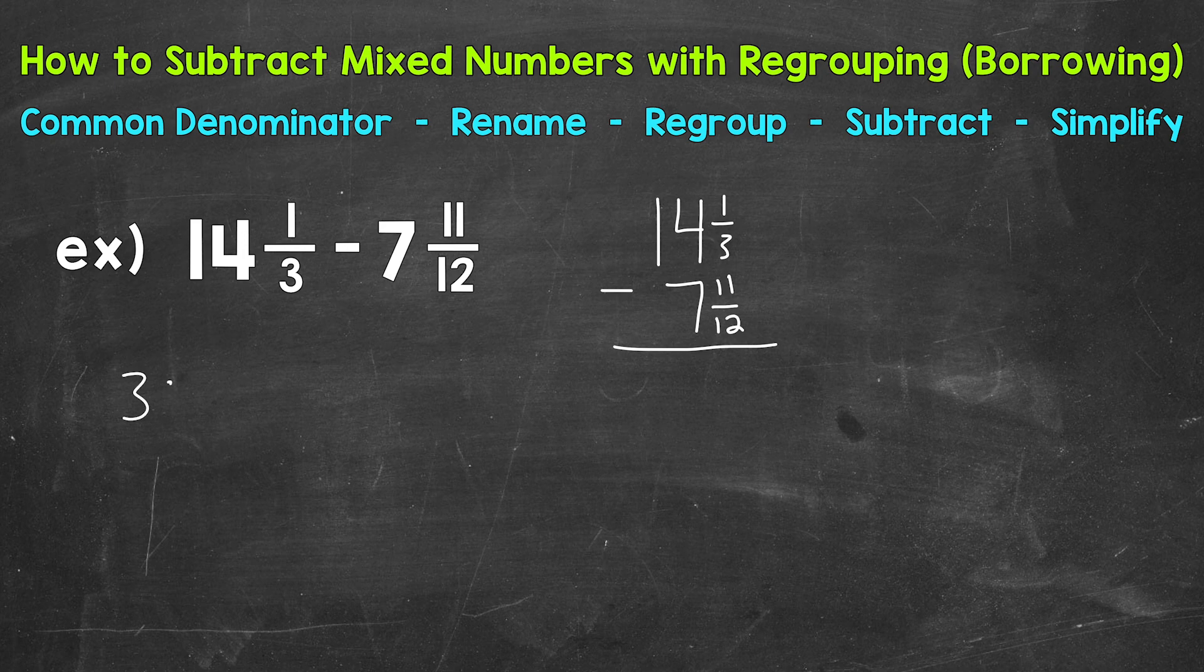So 3 and 12. Now, my suggestion would be write out 4 or 5 multiples each. Multiples go on forever. So again, write out 4 or 5. See if you have any in common. If not, you can always extend your lists.